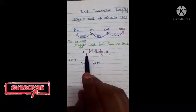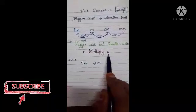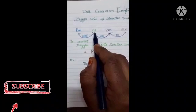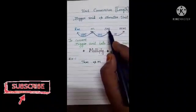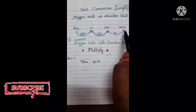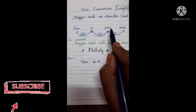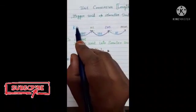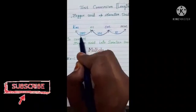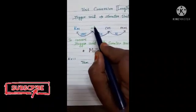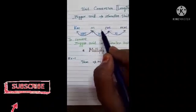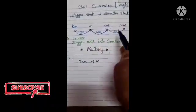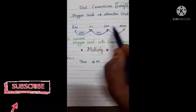Which number should be multiplied? You need to know the relationship between the units. One thousand meters make one kilometer, one hundred centimeters make one meter, and ten millimeters make one centimeter. So: to convert kilometer to meter, multiply by 1000; meter to centimeter, multiply by 100; centimeter to millimeter, multiply by 10.